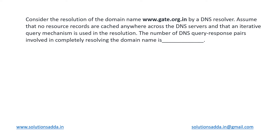This is a Networks question based on the Domain Name System. We have to consider the domain name www.gate.org.in to be resolved by a DNS resolver. We assume that there are no resource records cached anywhere across the DNS servers, and the mechanism being used is iterative. We need to find the number of DNS query-response pairs involved in the complete resolution of the given domain name.